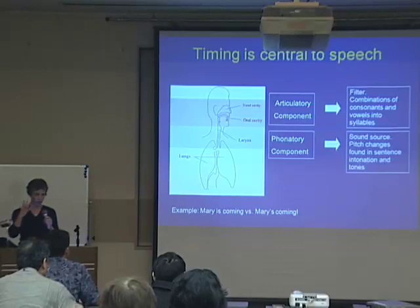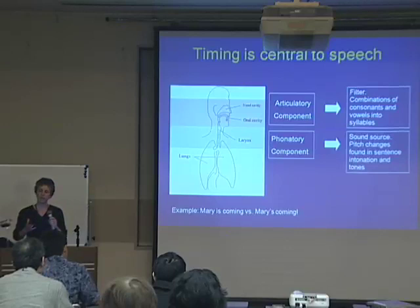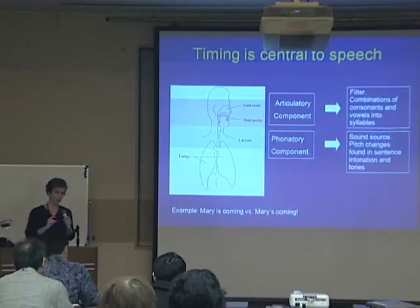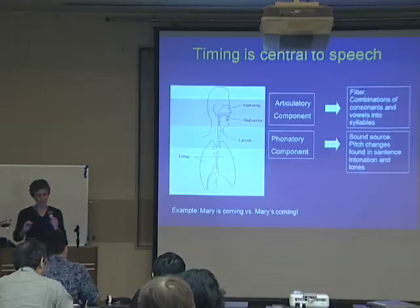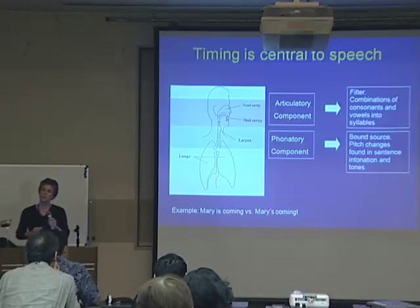This sound wave travels to the oral cavity, and there we modify the shape of the oral cavity with our tongue, lips, and the movement of the jaw. This behaves like a set of filters that modify the amplitude of the sound wave produced in the phonatory component. With this, we can relate the oral cavity to the production of consonants and vowels, and the lines to the production of pitch, which changes the melody of a sentence.